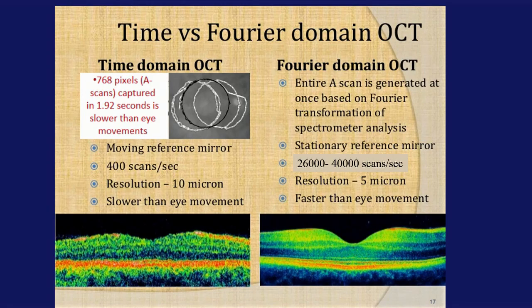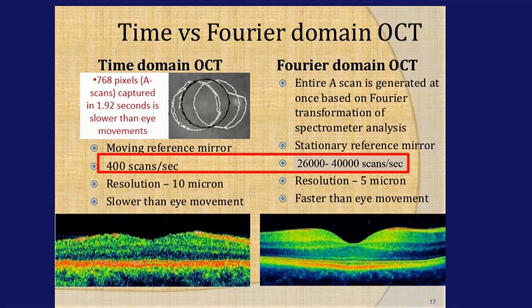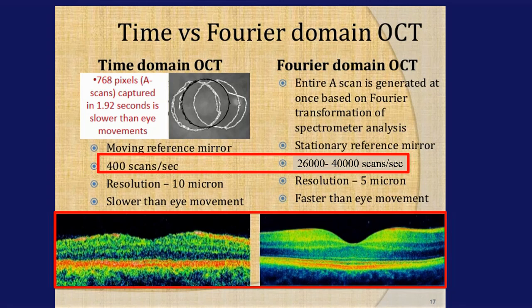Time domain OCT is a slow process because it depends on the mechanical movement of a mirror, allowing eye movements to be captured as artifact. It achieves only about 400 scans per second. Spectral domain OCT, using the Fourier transform, achieves 26,000 to 40,000 scans per second — far faster than eye movement — producing much more stable images. Resolution is also better at 5 microns compared to 10 microns for time domain. This speed also enables OCT angiography, which will be discussed in another presentation.